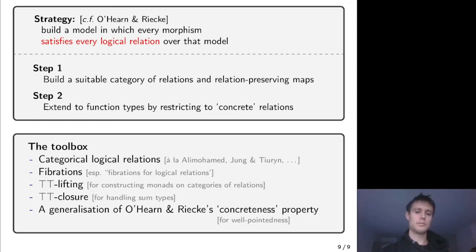The toolbox consists of completely categorical constructions, so we use a categorical treatment of logical relations, fibrations, ⊤⊤-lifting and ⊤⊤-closure for handling monads and sum types respectively, as well as a categorical generalization of O'Hearn and Riecke's concreteness property.